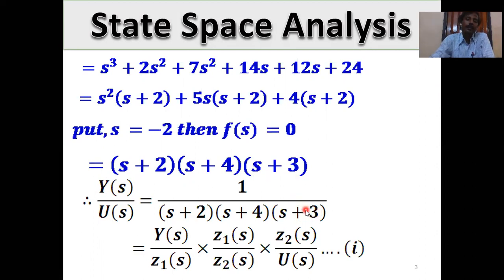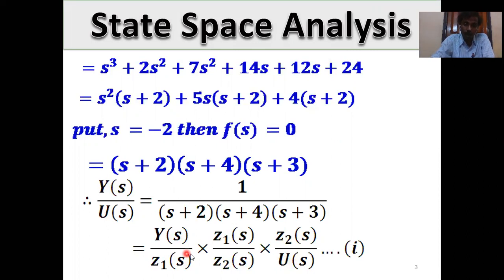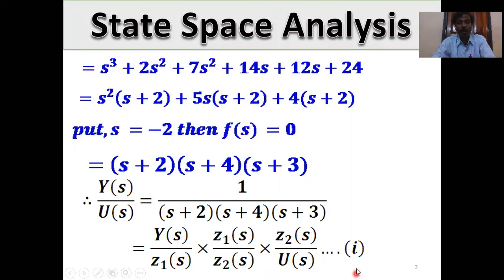We write Y(s)/U(s) as the product: [Y(s)/Z1(s)] × [Z1(s)/Z2(s)] × [Z2(s)/U(s)]. Cancelling Z1(s) and Z2(s), the left-hand side Y(s)/U(s) equals Y(s)/U(s). This is the technique for cascade decomposition.